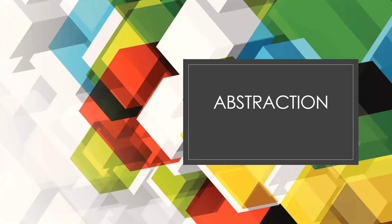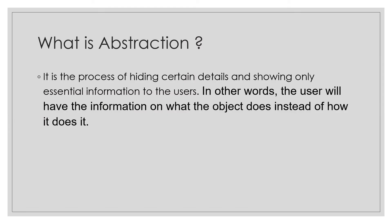In this video, we're going to understand one of the most important concepts of Java called abstraction. Abstraction is the process of hiding certain details and showing only essential information to the user. In other words, the user will have information on what the object does instead of how it does. We are simply hiding the business logic from the user, because we don't want the user to have access to it.